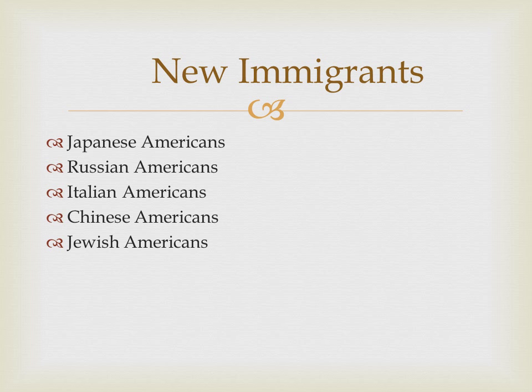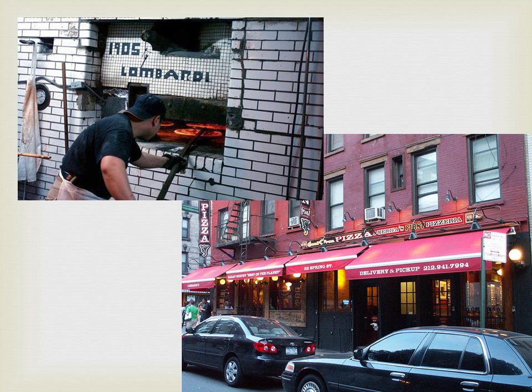Some of the groups we call new immigrants: Japanese Americans, Chinese Americans, Russians, Italians, Jewish Americans — these are groups I'll be referencing today and in later lectures. There is one that doesn't seem to fit: Japanese are from Japan, Russians from Russia, Italians from Italy, Chinese from China — but Jewish? There's no Judea, no Jewish country. That's a religion, a culture, not a country. Historians call them 'Jewish Americans' because at that time they were always distinguished as a unique group regardless of where they were from.